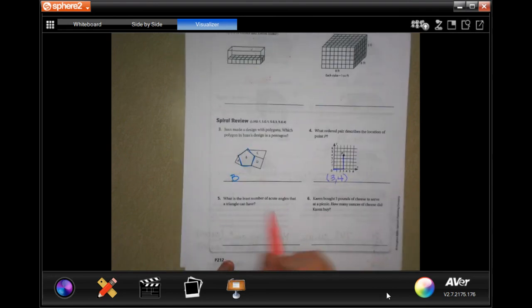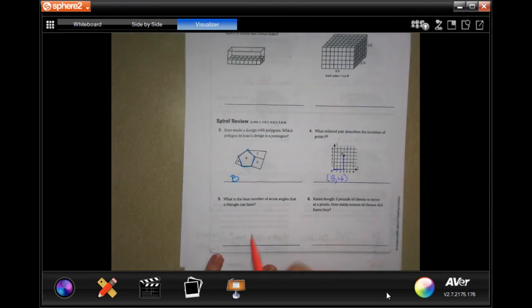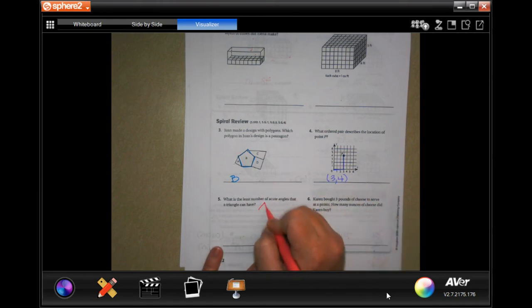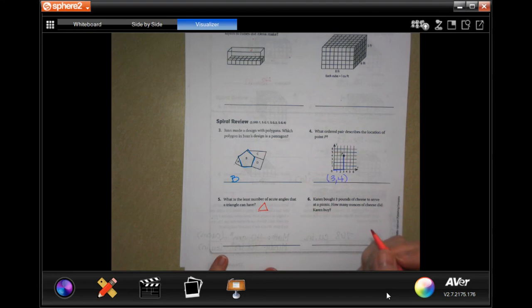What is the least number of acute angles that a triangle can have? What's the least number?